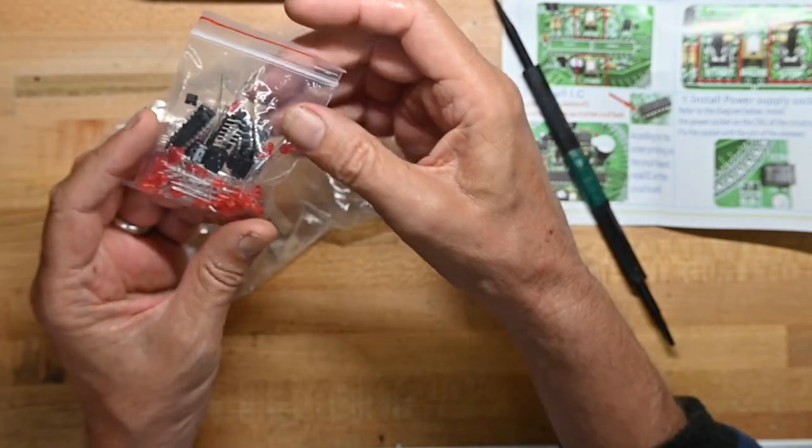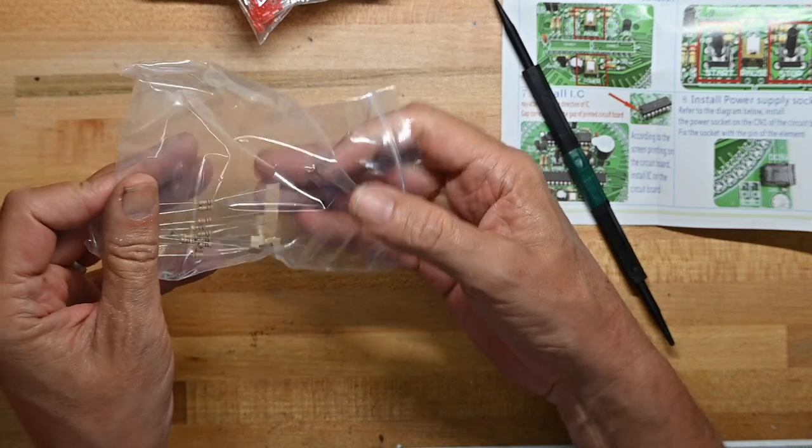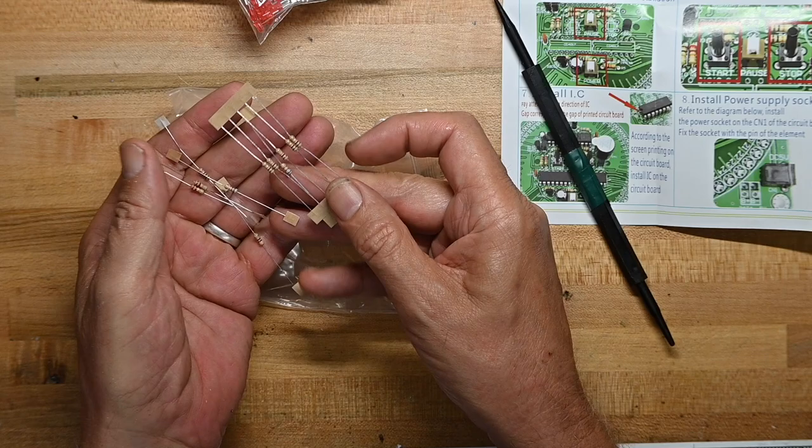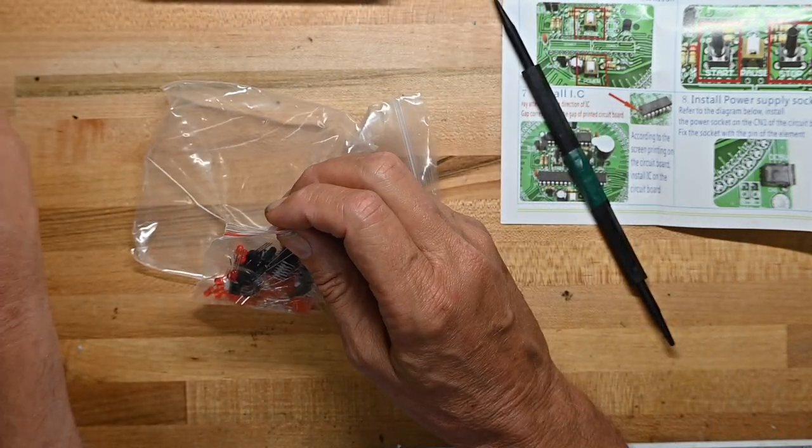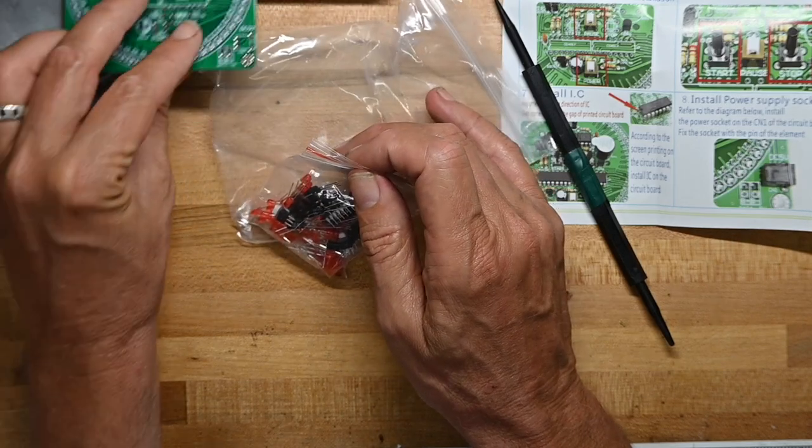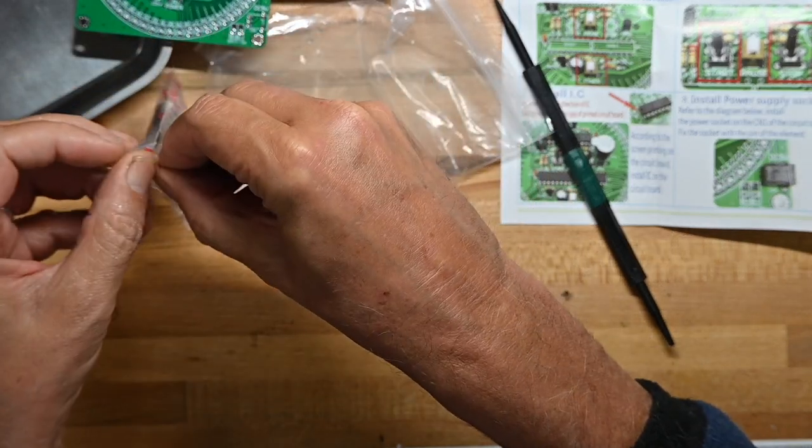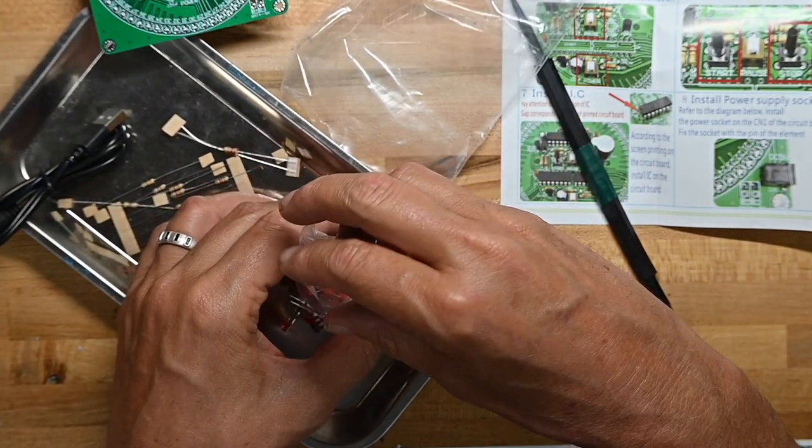Then we've got the components. Let's see, we've got resistors here first. Not too many. So instead of resistor time today, we'll have red LED time. Let's dump all these out. Let's see what we got.